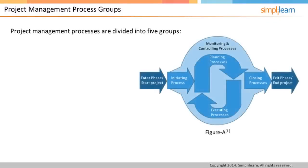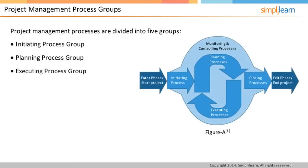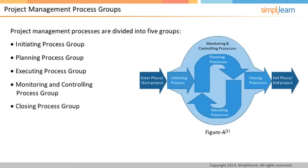The project management processes are divided into five process groups: initiating process group, planning process group, executing process group, monitoring and controlling process group, and closing process group. The initiating process happens at the beginning of the project or a phase. The planning, executing, and monitoring and controlling processes go together — you plan, execute, and replan based on the execution result. The project closing processes are performed when the project work or a phase within the project is completed.